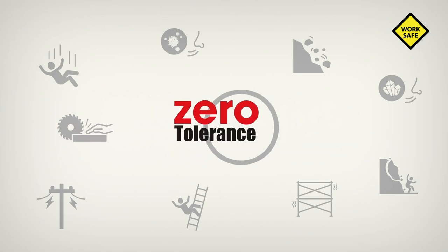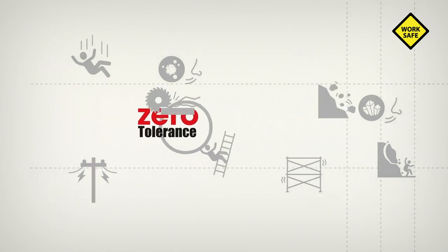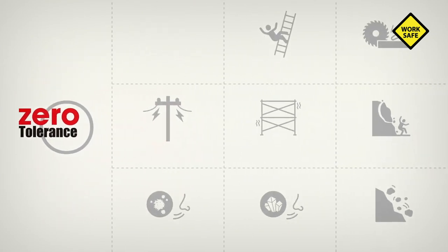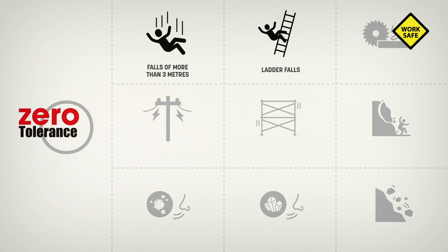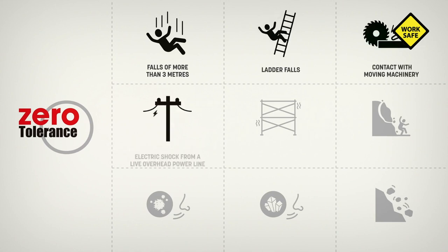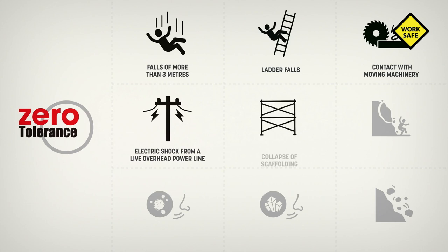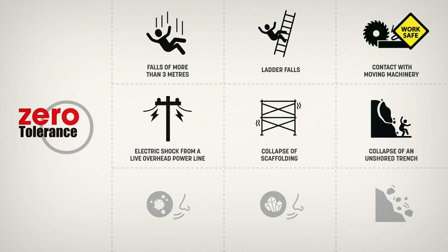Zero tolerance targets: falls of more than three meters, ladder falls, contact with moving machinery, electric shock from a live overhead power line, collapse of scaffolding, and collapse of an unshored trench.